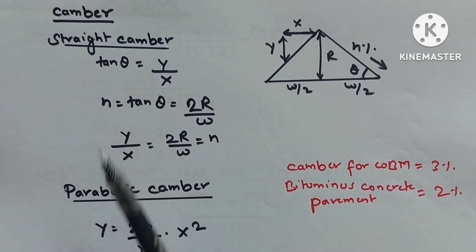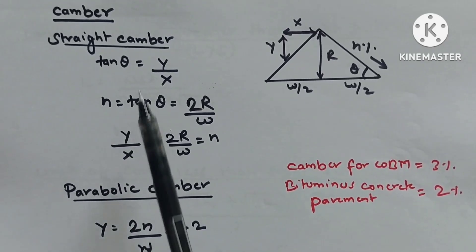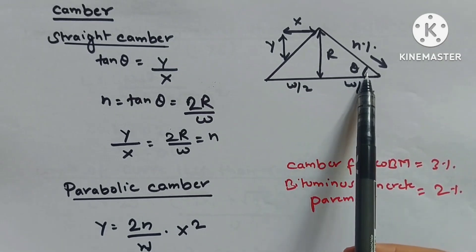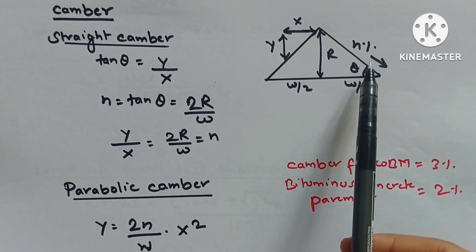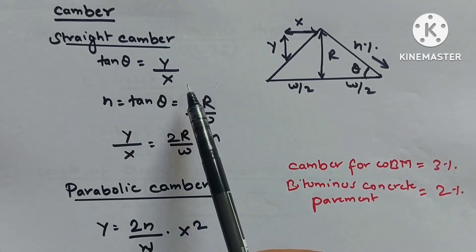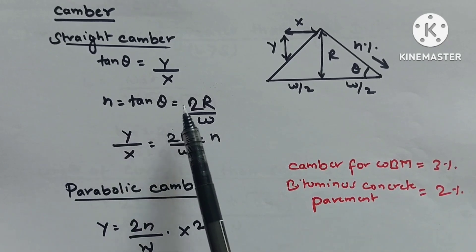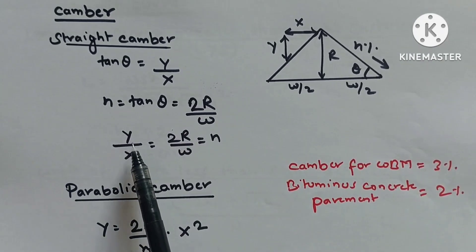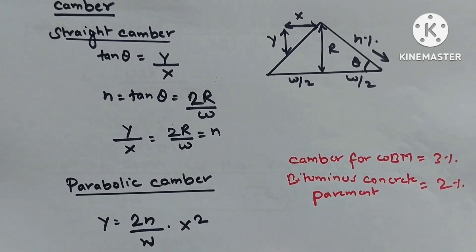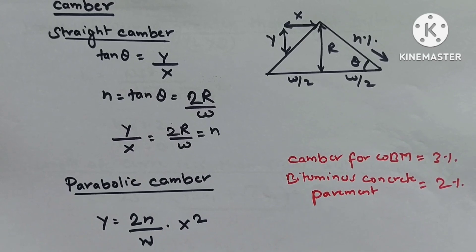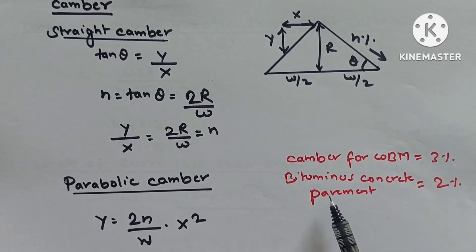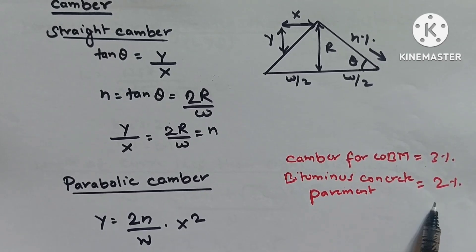Camber: Two types — straight camber and parabolic camber. For straight camber, tan θ = y/x = 2R/W = n. For parabolic camber, y = (2n/W)x². In questions, camber for WBM is 3%, and for bituminous concrete pavement it is 2%.